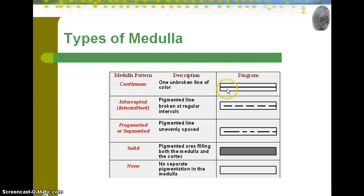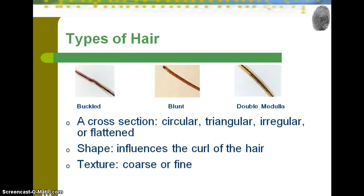Medullas can also vary by ethnic group. Animals tend to have very distinct-looking medullas, and one of the things you'll be doing in lab is looking at different types of medullas and trying to match them from dog, horse, pig, and other animals. In addition, the different types of hair on the body can have different characteristics — for example, head hair versus eyebrow hair or pubic hair.